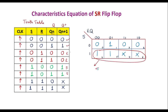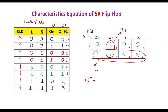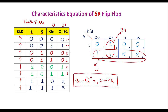Cells 1 and 5 along with the don't cares form a quad, and cells 1 and 5 also form a pair. The pair of cells 1 and 5 along the column gives the term R̄Q. Therefore, the characteristic equation for the SR flip-flop is: Qn+1 = Q+ = S + R̄Q. Substituting the values of S, R, and Q will reproduce the same truth table.